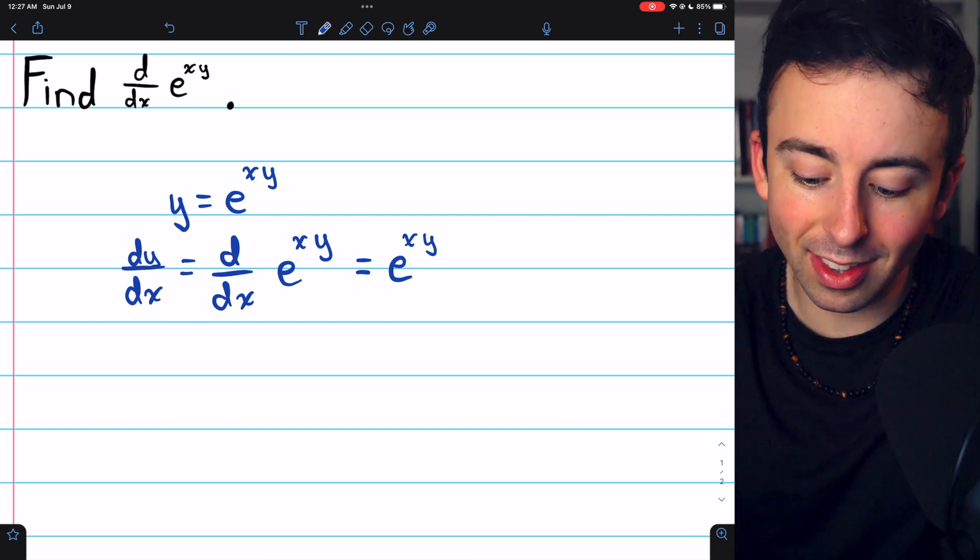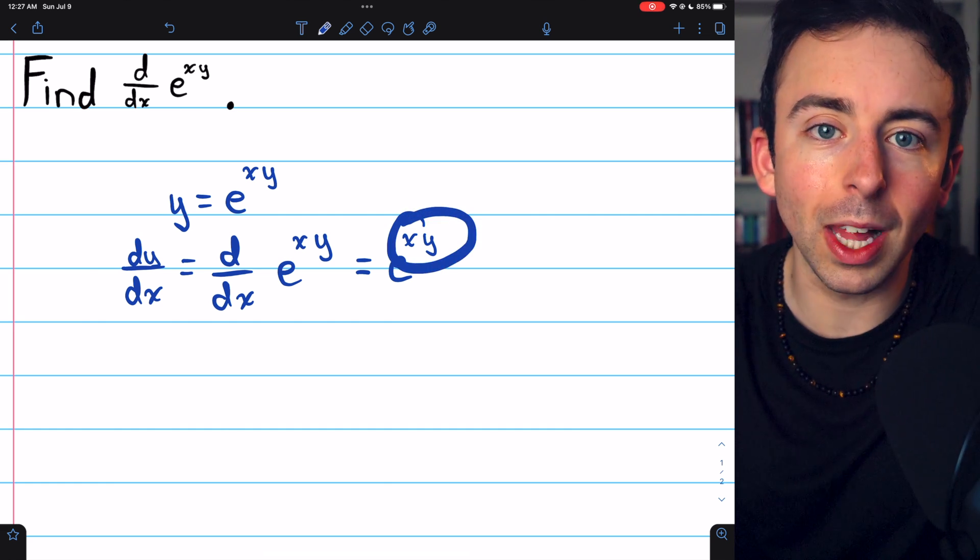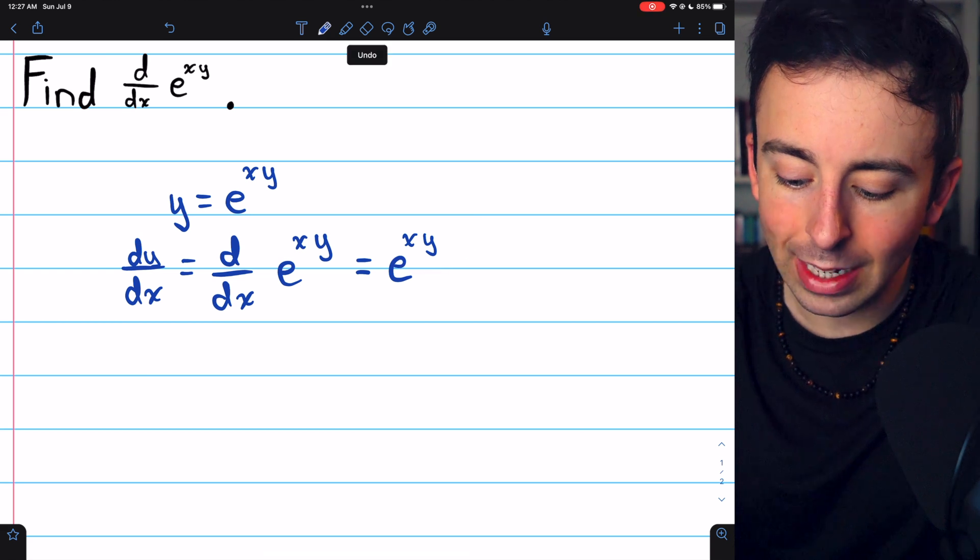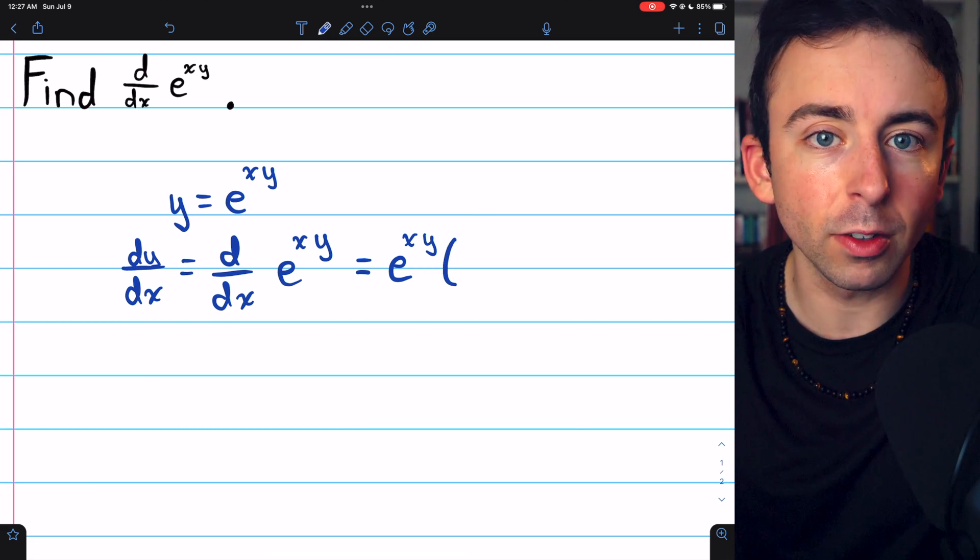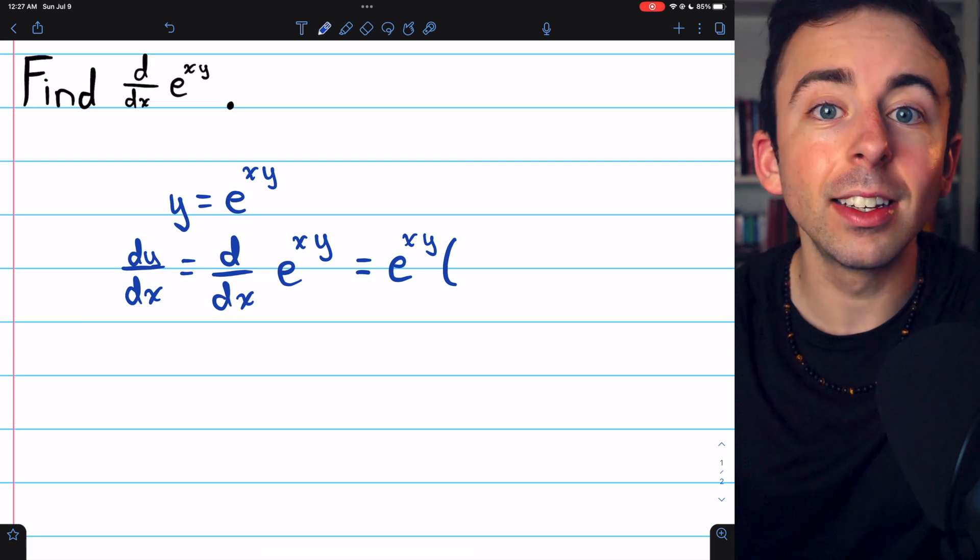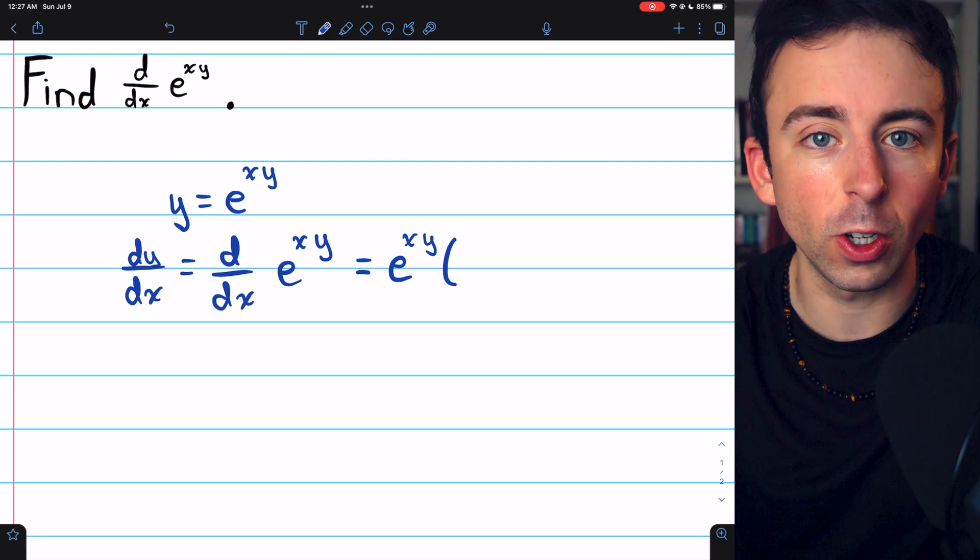But then, because that thing, xy, is a function, we need to multiply by its derivative. Now, the derivative of xy requires us to use the product rule, because we have x times y, and y is an implicit function of x.